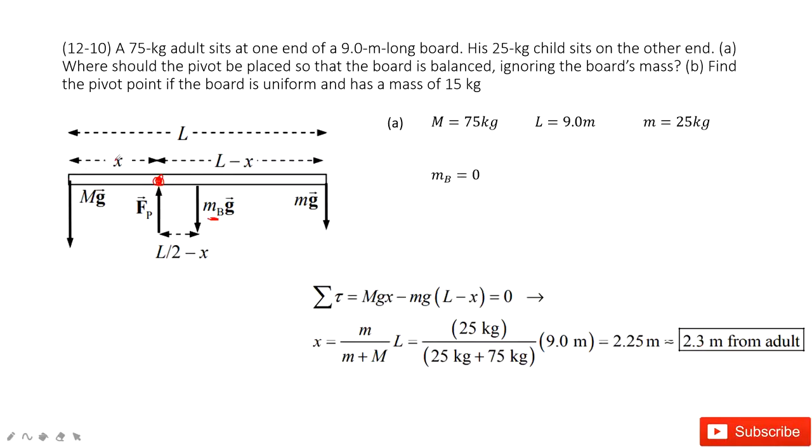So x is 2.3 meters. The rotation axis Fp is just 2.3 meters from the adult.